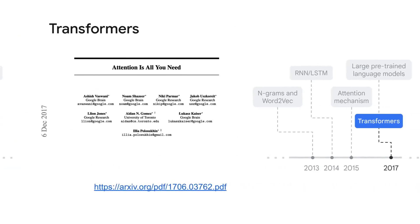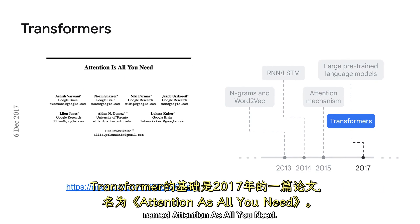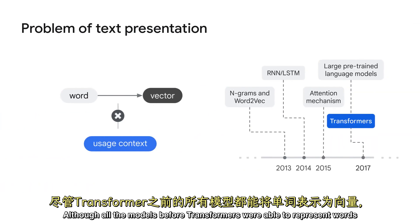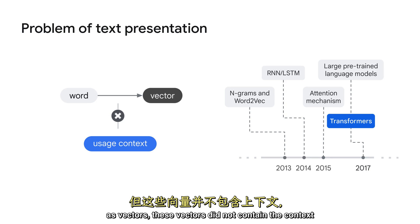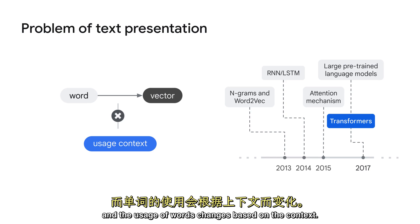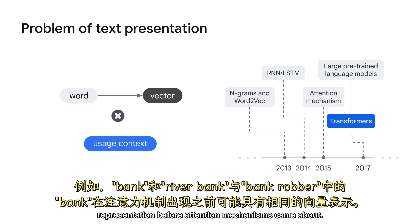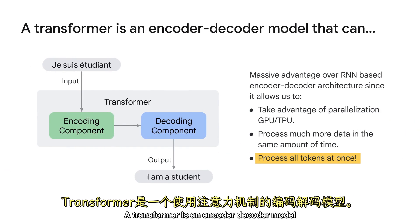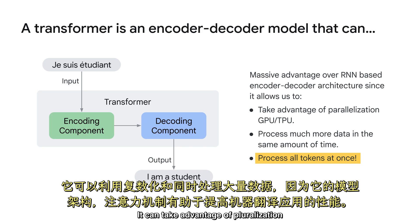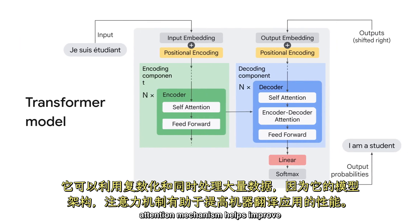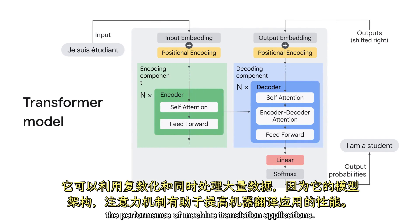In this presentation, we'll focus on transformers. Transformers is based on a 2017 paper named Attention is All You Need. Although all the models before transformers were able to represent words as vectors, these vectors did not contain the context, and the usage of words changes based on the context. For example, 'bank' in riverbank versus 'bank' in bank robber might have the same vector representation before attention mechanisms came about. A transformer is an encoder-decoder model that uses the attention mechanism. It can take advantage of parallelization and also process a large amount of data at the same time because of its model architecture. Attention mechanism helps improve the performance of machine translation applications.